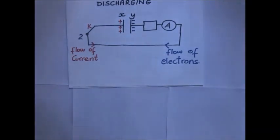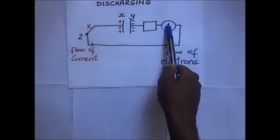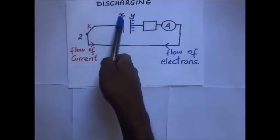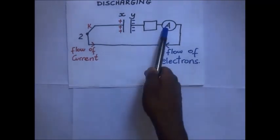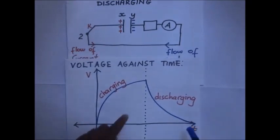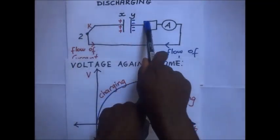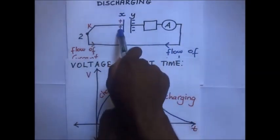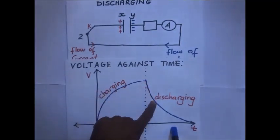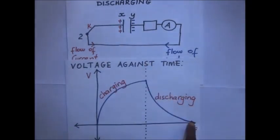As the potential difference across the capacitor decreases, the capacitor also loses its energy — that is how it gets discharged. The current flowing through the ammeter is initially high as electrons travel to discharge plate X, but as time goes on the current decays to zero, meaning the capacitor is fully discharged. On the voltage vs. time graph: voltage starts high and decays to zero as the capacitor fully discharges.